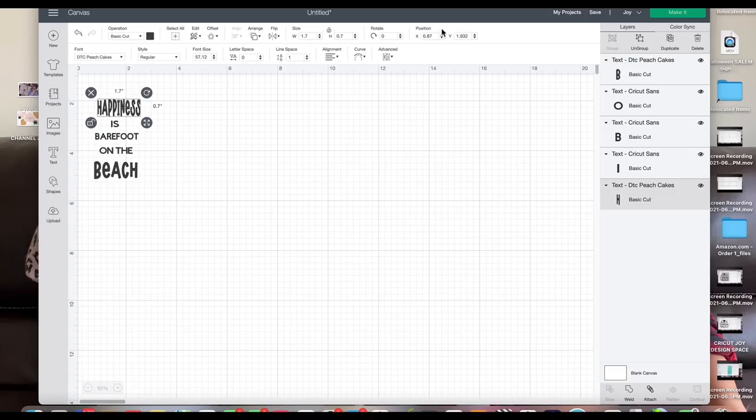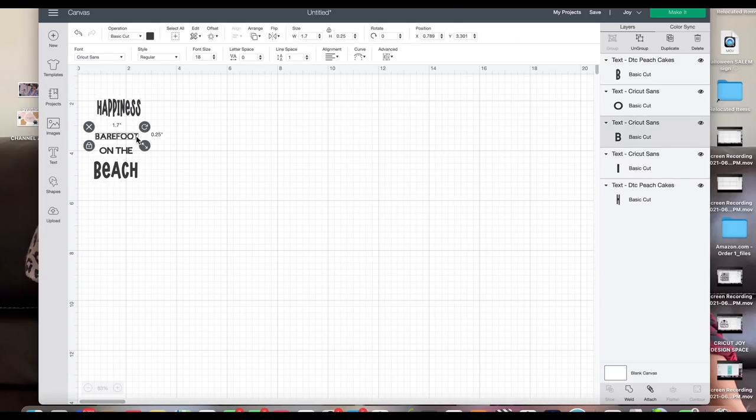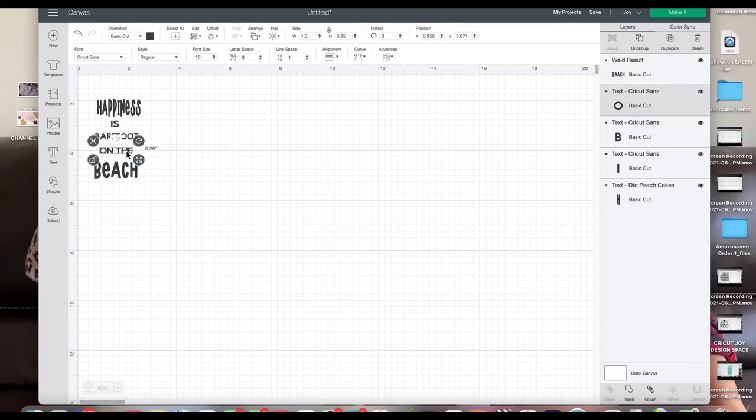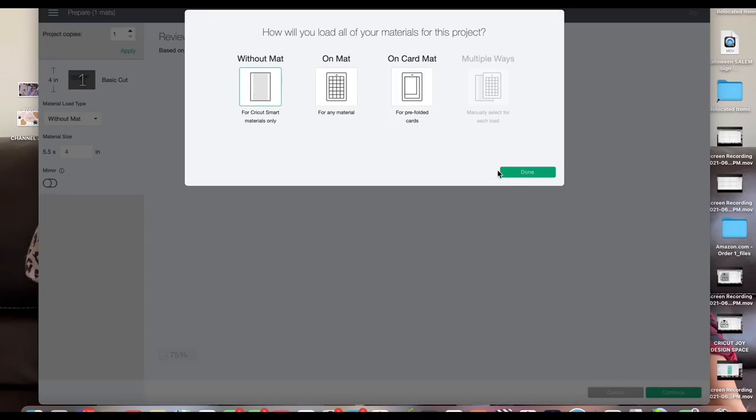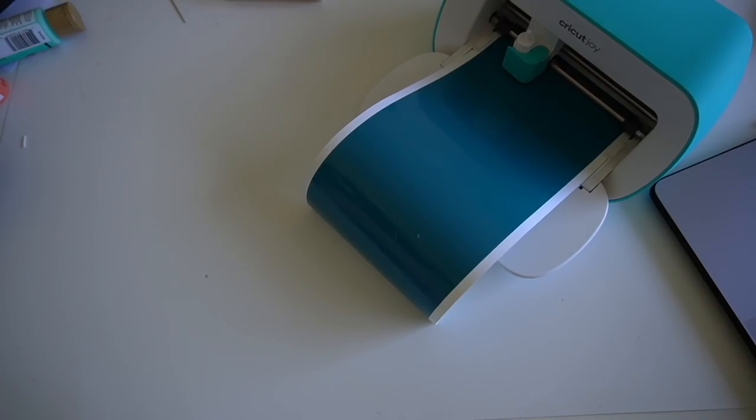Over on Design Space, I went ahead and put in my measurements for each font. Now the top and bottom are obviously bigger than the ones on the middle. And then I went ahead and welded them together so that when I put them on the mat, even though they are separate, the words that are supposed to go together are together. So I'm just placing them on my mat and I'm using my Cricut Joy for this, but you can use any Cricut machine.